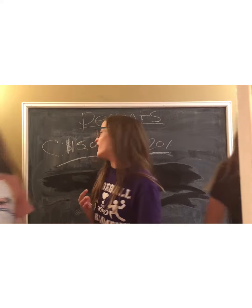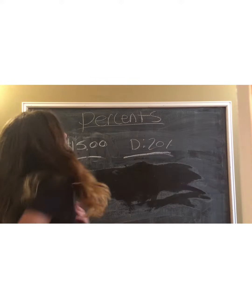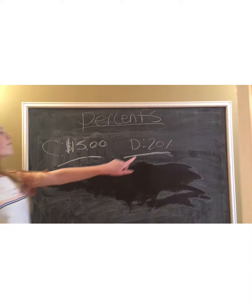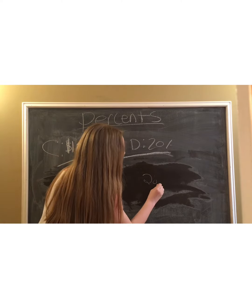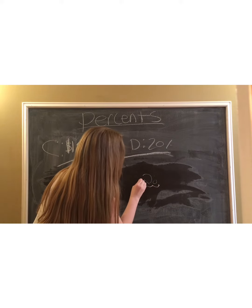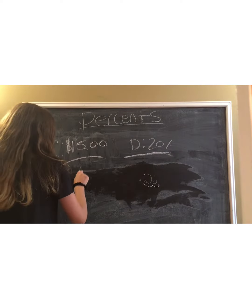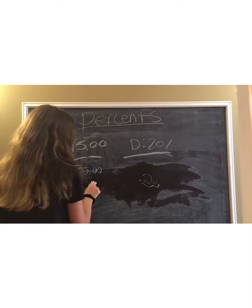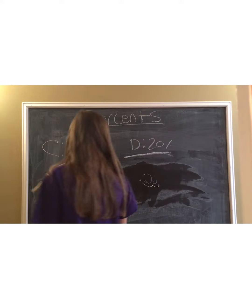We're back from the mall and found a shirt for $15 with a 20% discount. A discount is when you take an amount off the original price to reduce it. To solve your discount, you take your discount — which is 20 — and put a decimal point at the end. Then you move the decimal over twice, making it .2. Then you do $15, the original price, times .2.